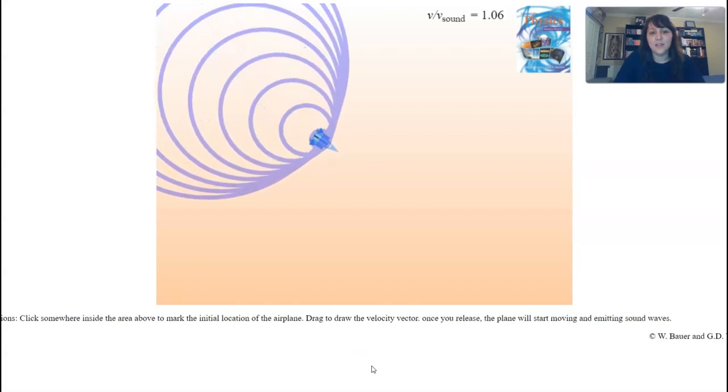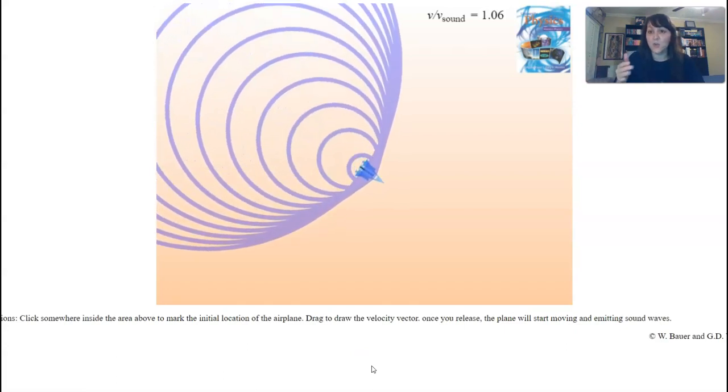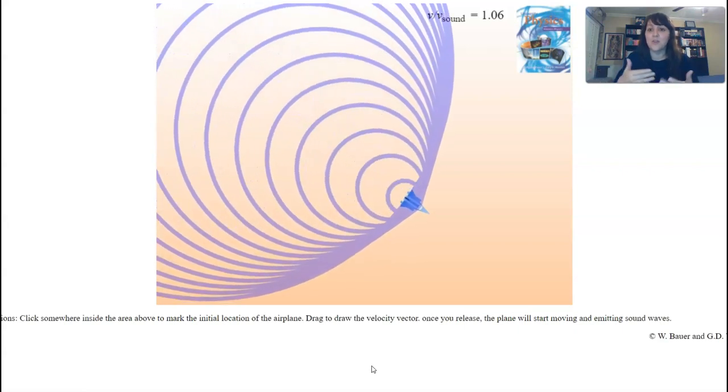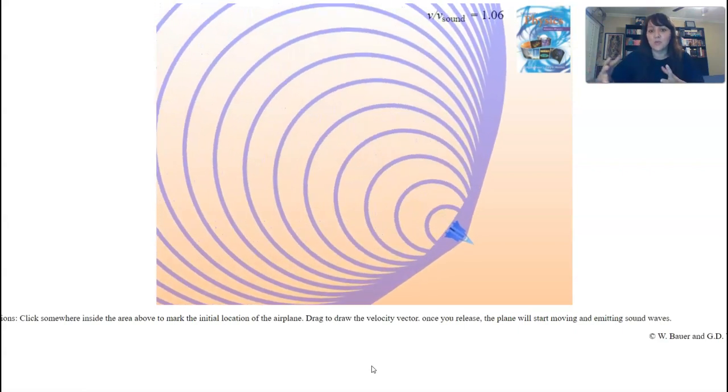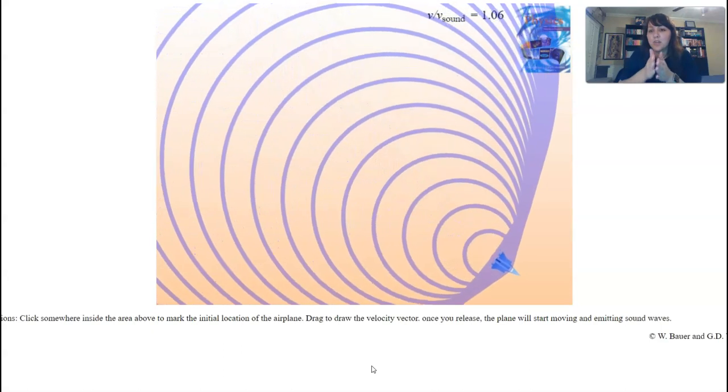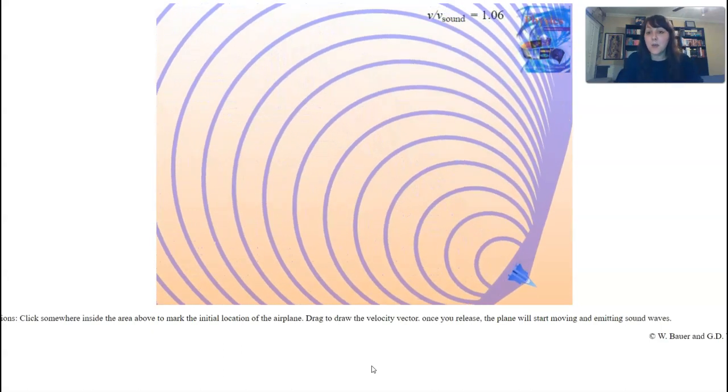And then, we can get a really fun thing where we break the sound barrier in this case. At which point, the plane is able to move faster than the wave fronts can, right? So, you're moving faster than the sound waves can move through. So, all the waves are just bunching up and you're just kind of moving out ahead of them. This, by the way, is also how a sonic boom works.